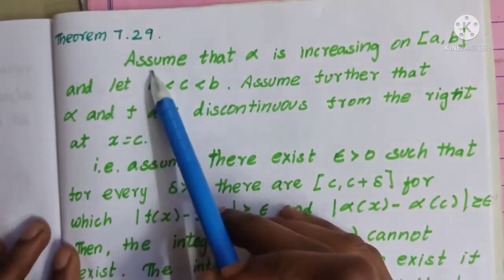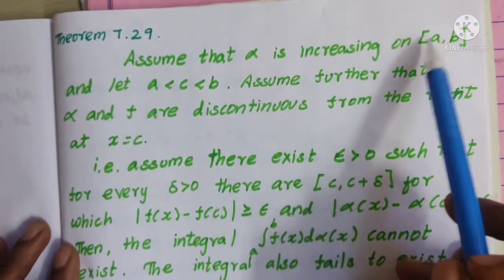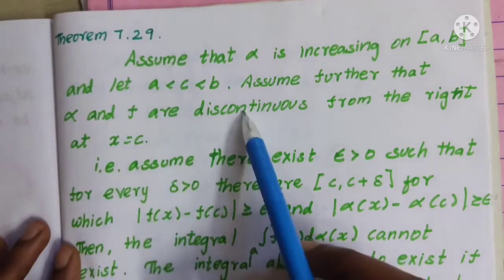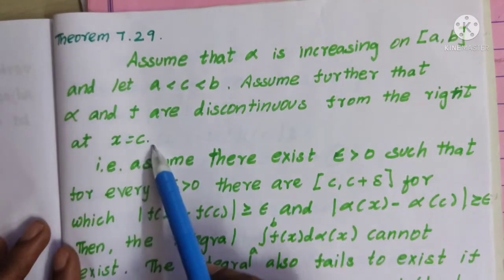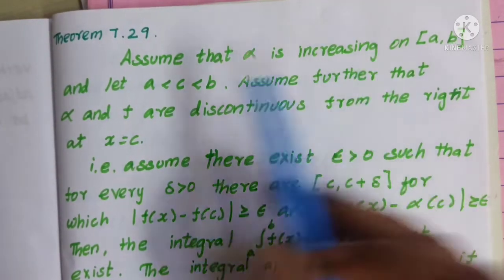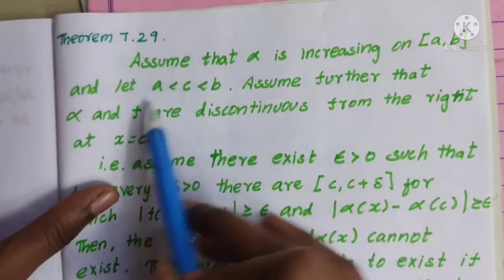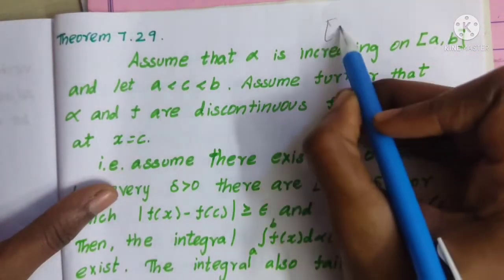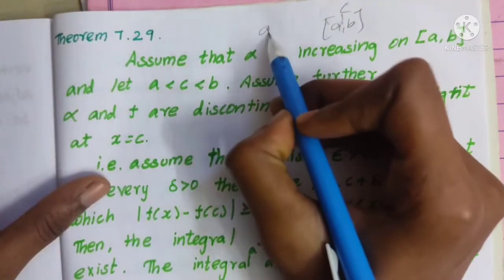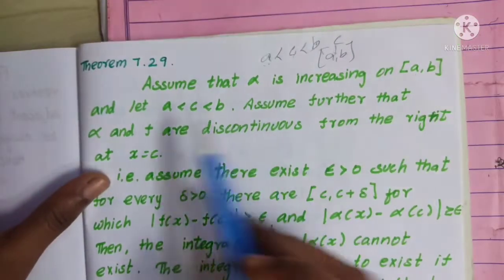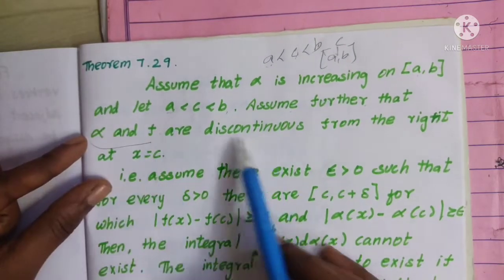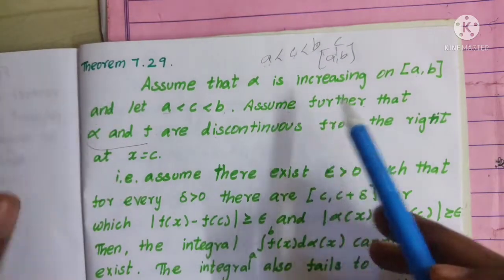In this video we will see real analysis, theorem 7.29. Assume that alpha is increasing on the closed interval [a, b] and let a < c < b. Assume further that alpha and f are both discontinuous from the right at x equal to c.